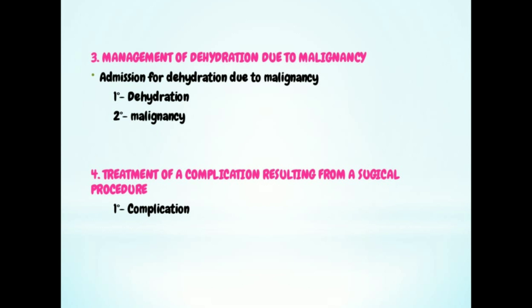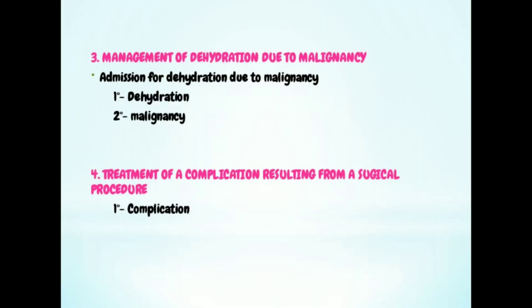For radiotherapy, the same sequence applies: primary is anemia, secondary is the neoplasm, and third is the code for the radiological procedure — Y84.2, which is a radiological procedure and radiotherapy as cause of abnormal reaction of the patient. For management of dehydration due to malignancy: unlike anemia in malignancy, dehydration is the primary — it comes as a flip because the reason for encounter is dehydration.